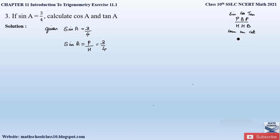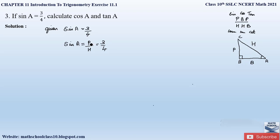So let us first draw a right angle triangle. Since we are finding out the trigonometric ratios for angle A, angle A will be our acute angle. We will name the triangle A, B, and C. The angle at which we are finding out the trigonometric ratio should be our acute angle and it should be at the base. The side opposite this acute angle A is the perpendicular, the side along A will be our base, and the side opposite the right angle will be our hypotenuse.